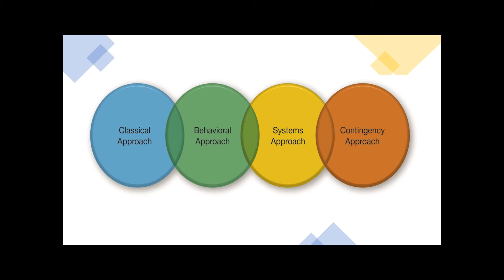Just as a reminder, there are four major approaches to management that come out of historical thought. The first is the classical — that's the topic of this lecture. Next lecture, we'll talk about the behavioral approach, and then the lecture after that, we'll look at both the systems and the contingency approach together. So today we're just looking at the classical approach to management.